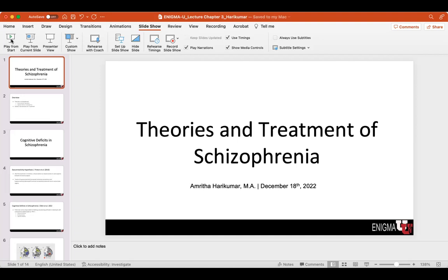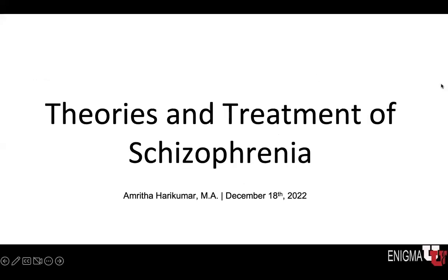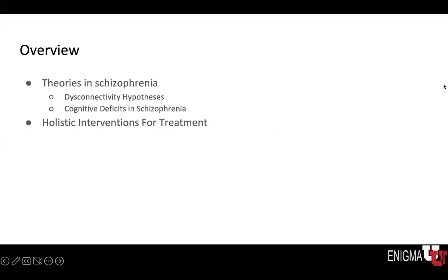So I'll quickly go over some of the theories in schizophrenia, specifically the disconnectivity hypothesis. That in itself could be a two-hour lecture, given that there are so many models and hypotheses and theories proposing why there's disconnectivity in schizophrenia. I'm instead going to focus on some papers that talk about cognitive deficits in schizophrenia, and that will be the main focus for this talk. And then finally, I will talk about holistic interventions for treatment.